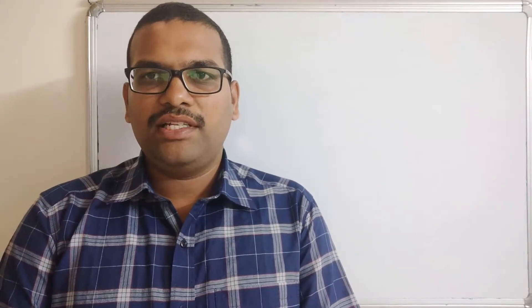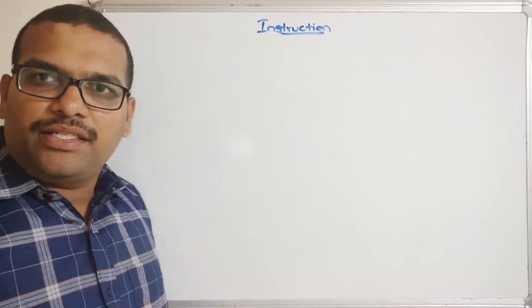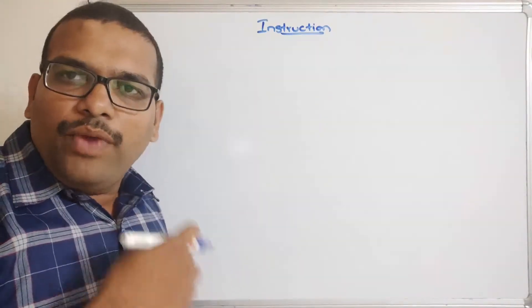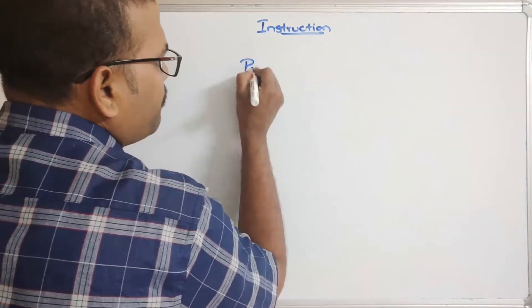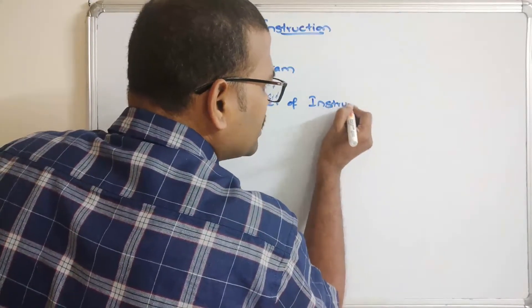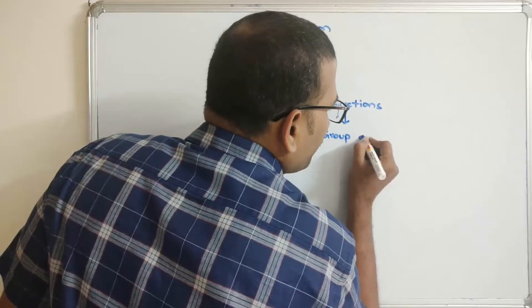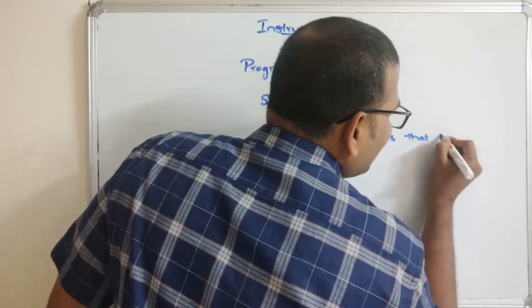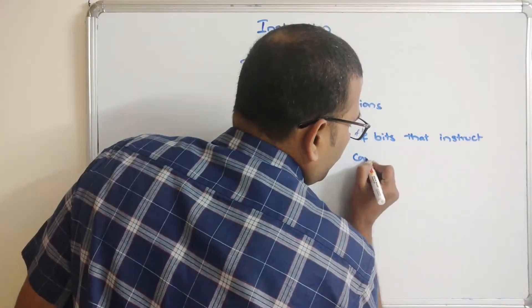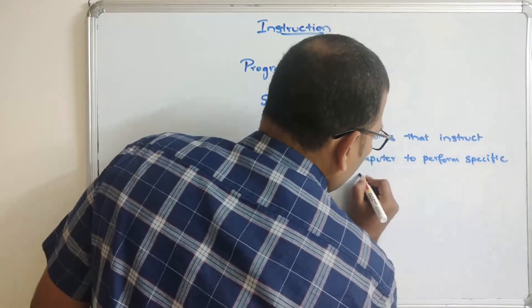Hello friends, welcome back to our channel. In today's session we will discuss one more concept in computer organization — that is instruction format and the types of instruction codes. First, let us know what is meant by an instruction. Every program that we are executing is done by the processor. A program is a set of instructions, and an instruction means a group of bits — the group of bits that instruct the computer to perform a specific operation.